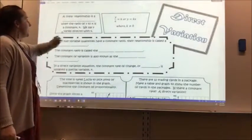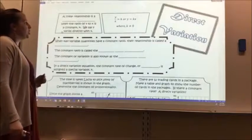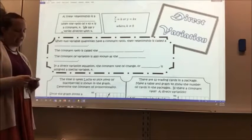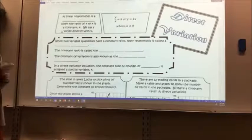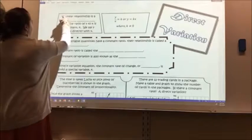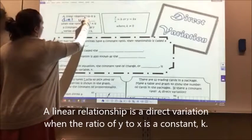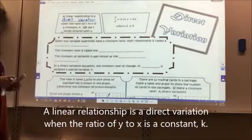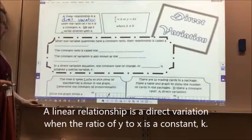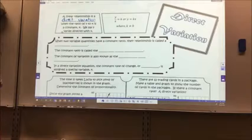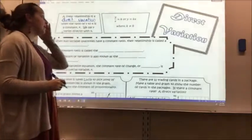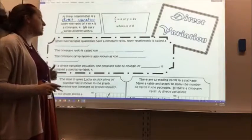A linear relationship is a direct variation when the ratio of y to x is a constant k. We say y varies directly with x. So y over x equals k, or y equals x times k, where k cannot be zero.